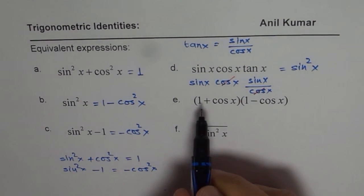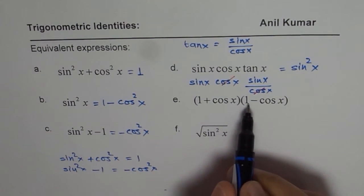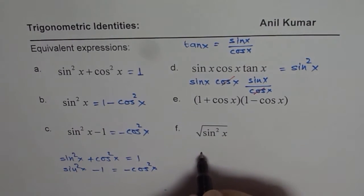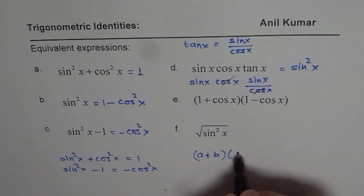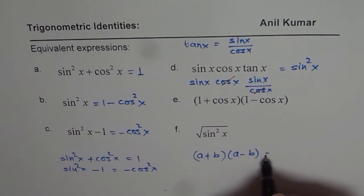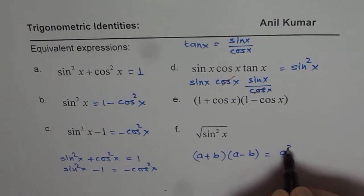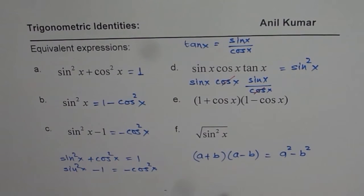Next one is 1 plus cos x times 1 minus cos x. I hope you remember the formula. A minus b, let me write plus first, times A minus b. So A plus b times A minus b is what? When you expand it, you get A square minus b square. That is what you get.